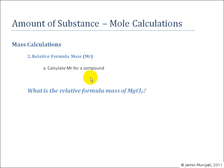So for calculating MR of a compound, for example, what is the relative formula mass of MgCl2? Well, the relative atomic mass of magnesium is 24.312 and the relative atomic mass of chlorine is 35.453. So for MgCl2,